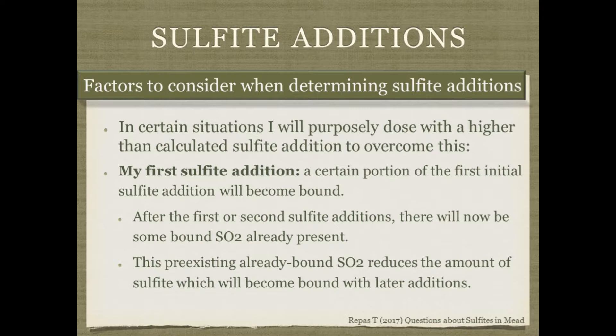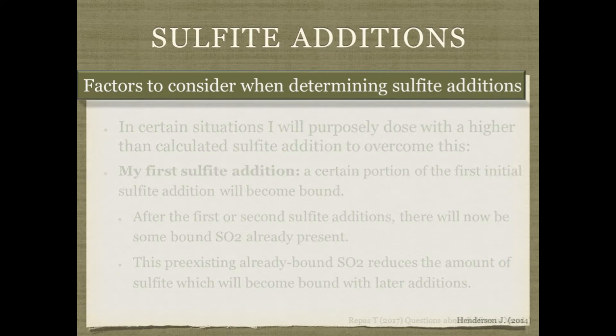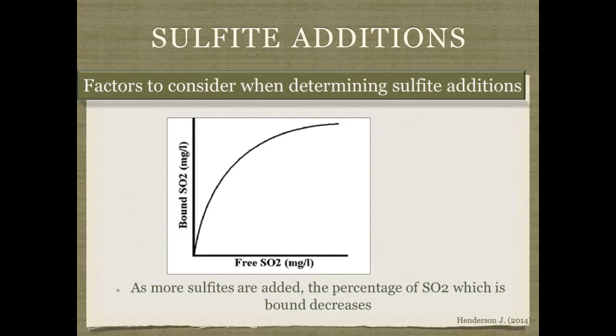I sometimes purposely overdose higher than the calculated addition to overcome binding. With my first addition I know a portion will become bound, so I overshoot. After the first or second additions, bound sites are occupied and subsequent additions more closely match calculator predictions. You can get away with overshooting early on because you'll be racking more and sulfites will decline over time. As you approach bottling, be more careful to avoid over-sulfiting.